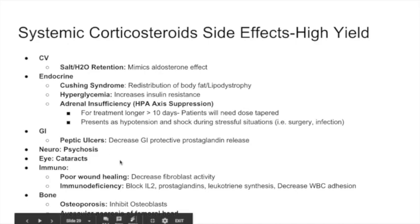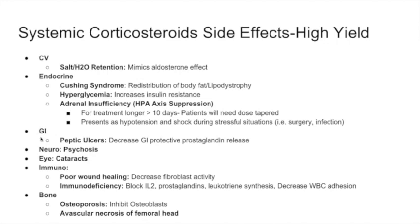I pulled this slide from the asthma review where we covered glucocorticoids. I'll go over the GI-specific side effects since we're in the GI section: glucocorticoids at high doses can cause peptic ulcers because they decrease the protective prostaglandin release from the stomach.